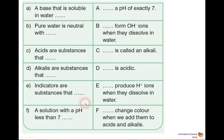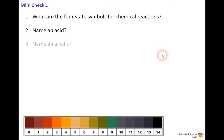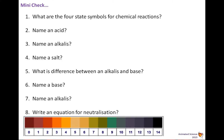Now if you look at these statements, you can match them up — pause the video and the answers will come in a second. Mini-check: What are the four state symbols for chemical reactions? Name an acid. Name an alkali. Name a salt. What is the difference between an alkali and a base? Name a base, then name an alkali you haven't thought of before. Write an equation for neutralisation. If you can do all these, you're on your way to knowing about acids, alkalis, and pH. That's the end of this video.